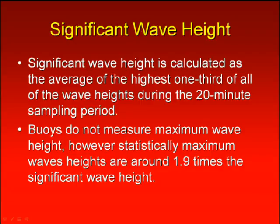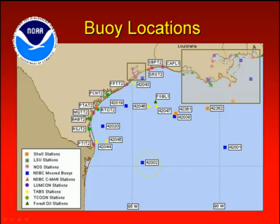However, statistically, maximum wave heights are around 1.9 times the significant wave height. There are half a dozen buoys located in the northwest Gulf of Mexico, some in deep water and some right off the coast.